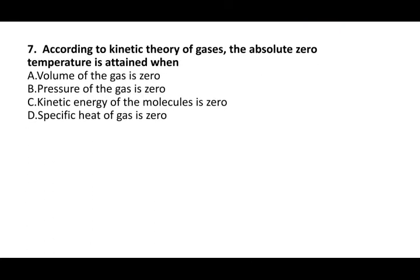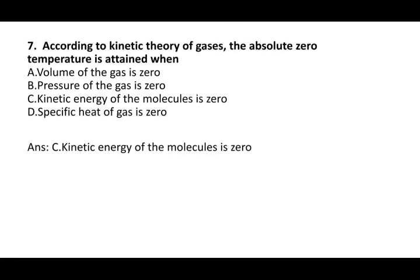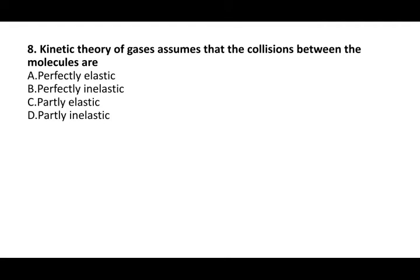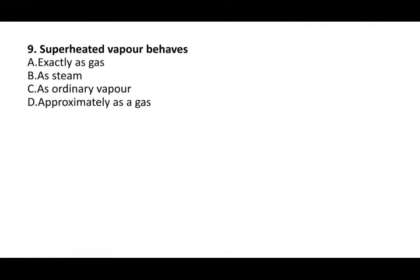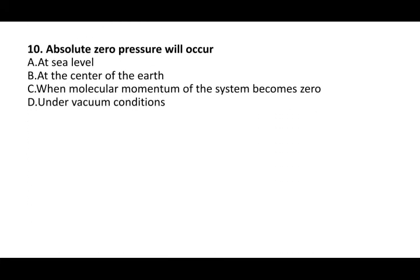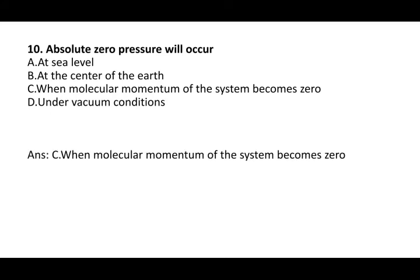Next question: according to the kinetic theory of gases, absolute zero temperature is attained when the kinetic energy of the molecules is zero. Next question: kinetic theory of gases assumes that the collision between the molecules is perfectly elastic. Next question: superheated vapor behaves approximately as a gas. Absolute zero pressure will occur when the molecular motion of the system becomes zero.